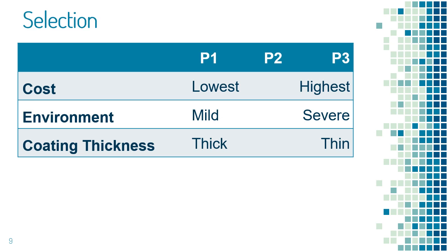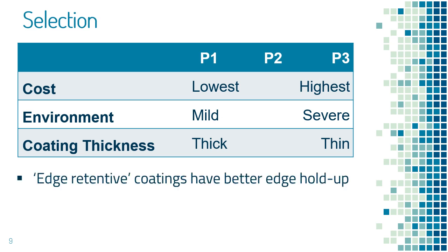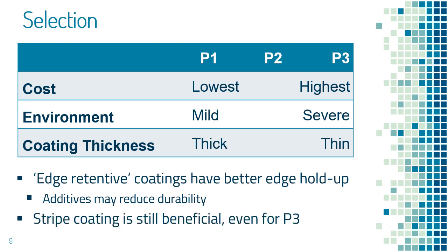As we have just seen, thicker coats tend to cover defects better than thin coats, so a lower grade may be acceptable with a high film thickness. There are edge-retentive coatings available which hold up better on sharp edges, but the additives required to achieve this may reduce durability. Note also that stripe coating — giving edges, welds, etc. an extra coat with a brush — is still beneficial even for P3 treatment.